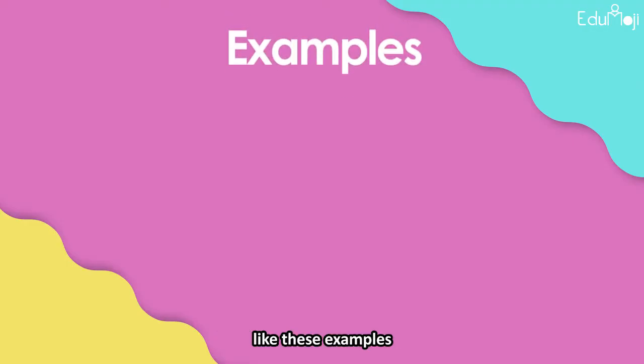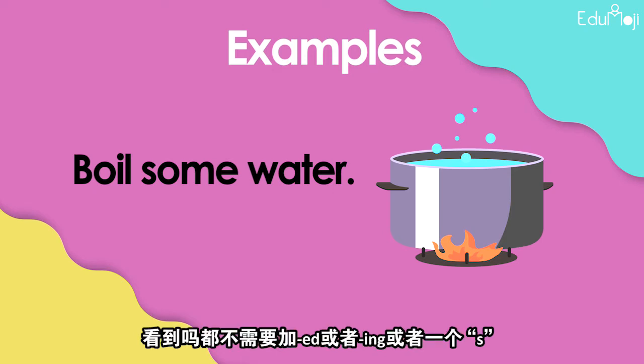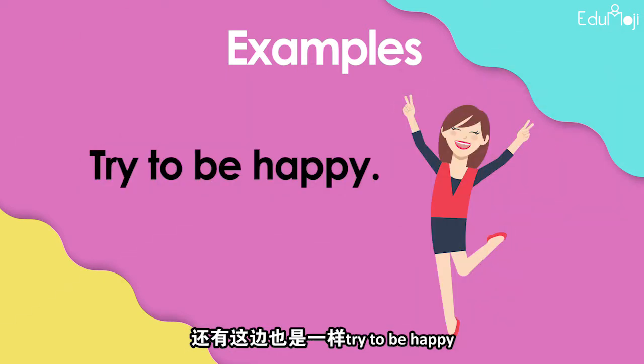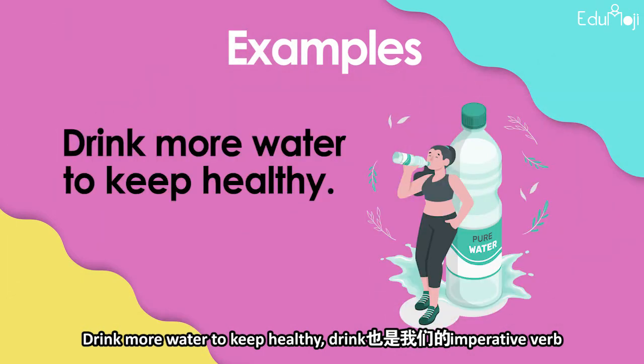Here are some examples: 'Boil some water' — 'Boil' is our imperative verb, you can see it's in the base form. No need to add -ed, -ing, or -s. Similarly, 'Try to be happy' and 'Drink more water to keep healthy' — 'Drink' is also an imperative verb.